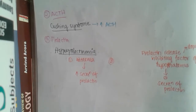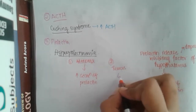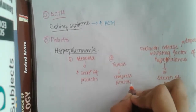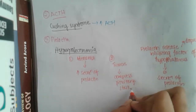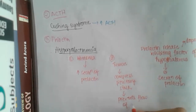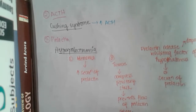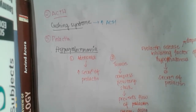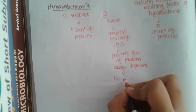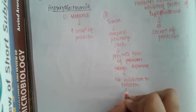There may be tumors which compress the pituitary stalk. This compression prevents the flow of the prolactin release inhibiting factor — that is, it prevents the flow of dopamine — so there is no inhibition of prolactin, resulting in increased prolactin secretion.